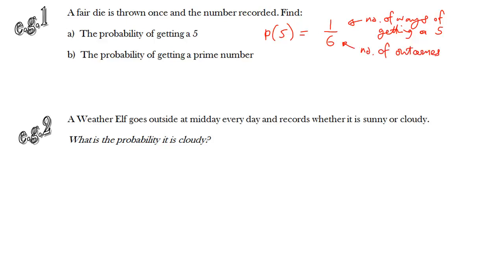For part B, the probability of getting a prime number: we need to know how many ways there are to get a prime number. The primes on a die are two, three, and five — so three options out of six, giving a probability of one half.